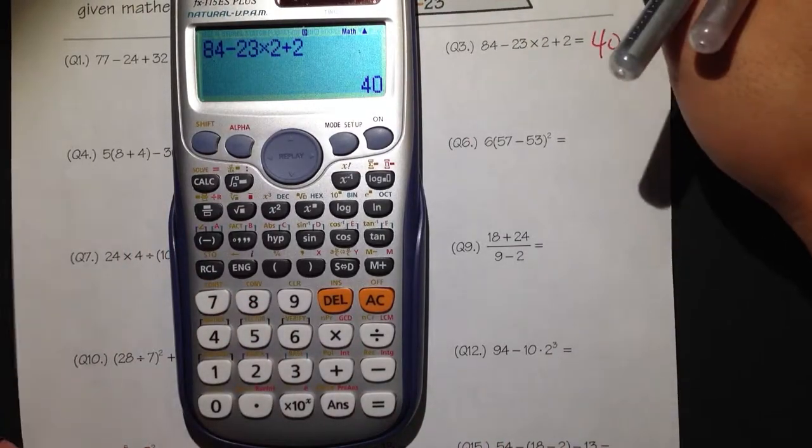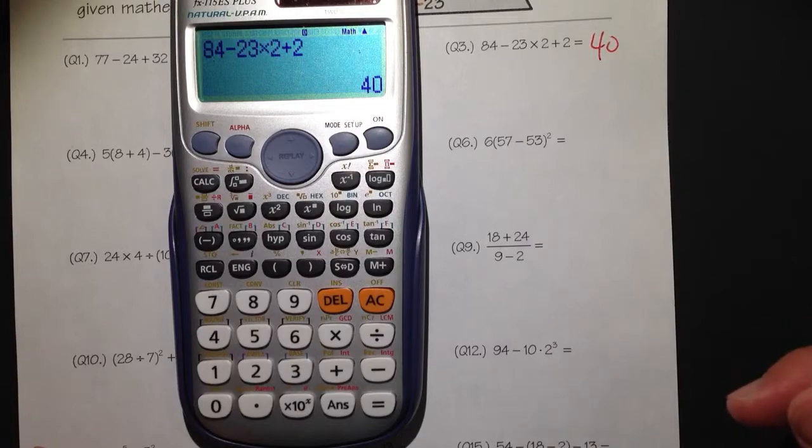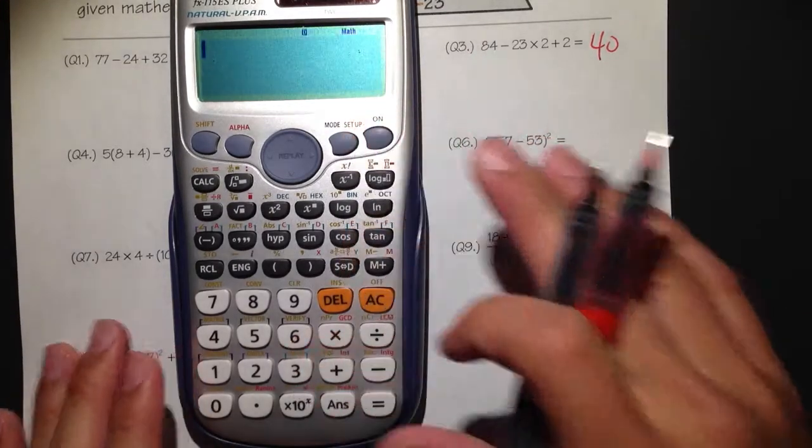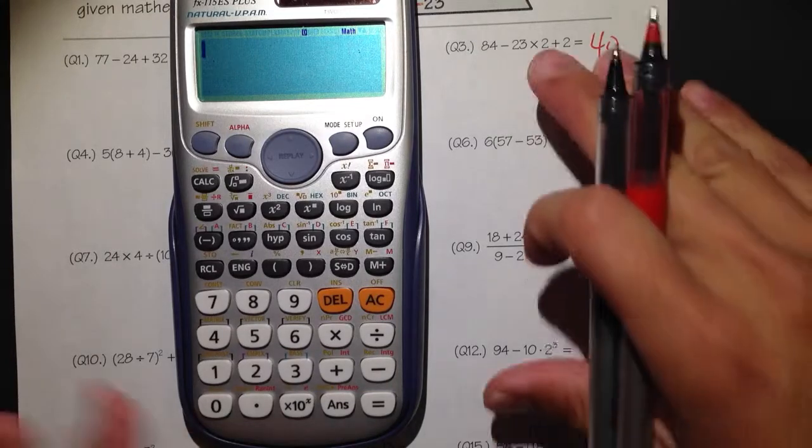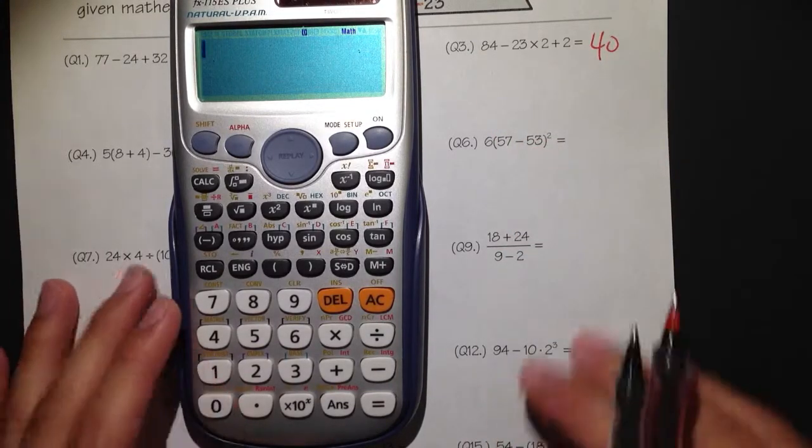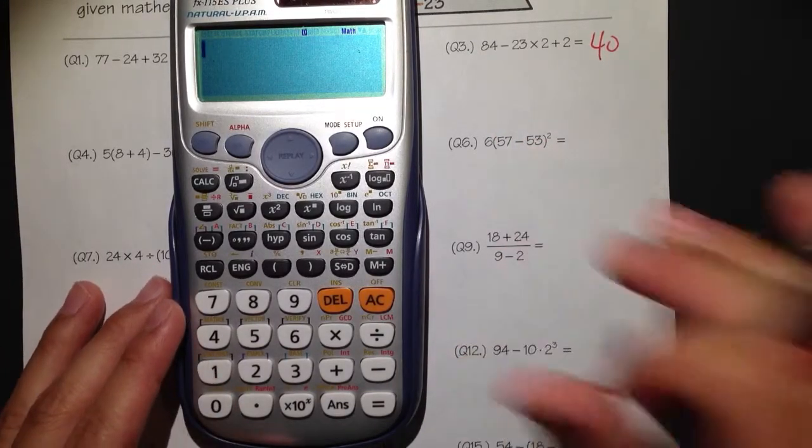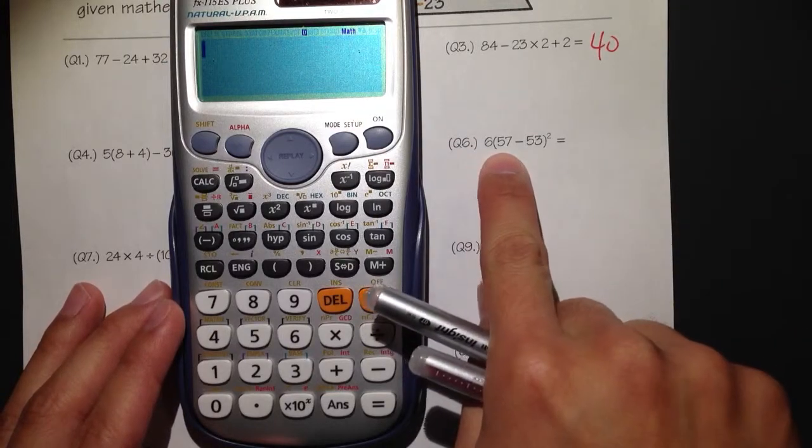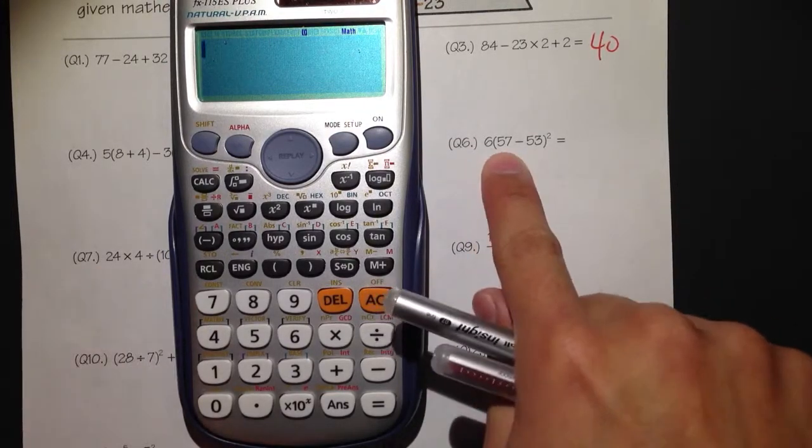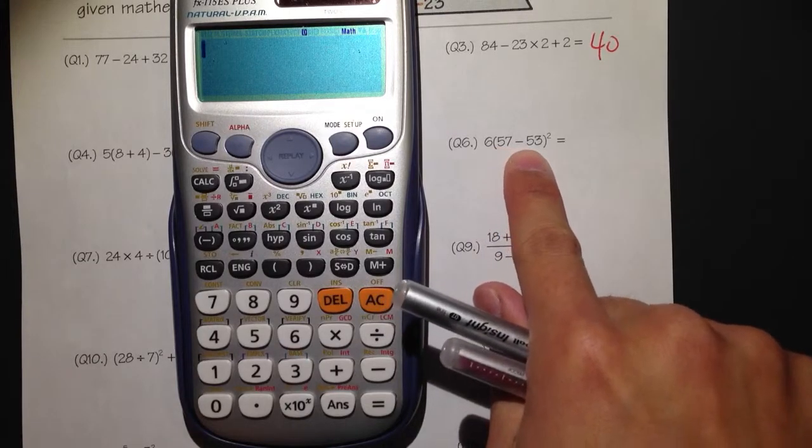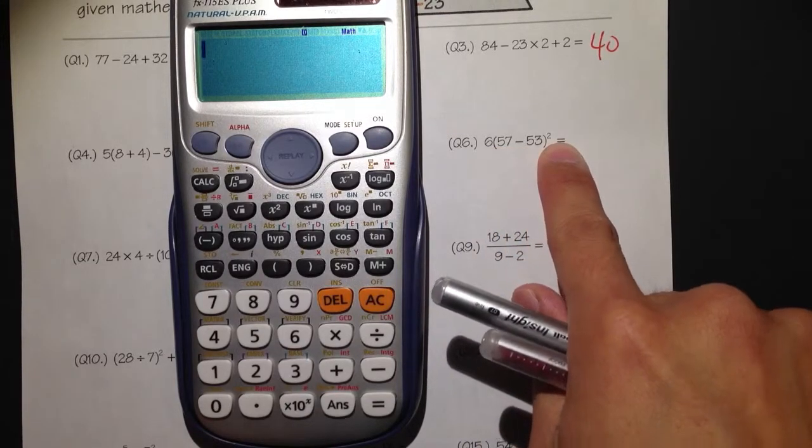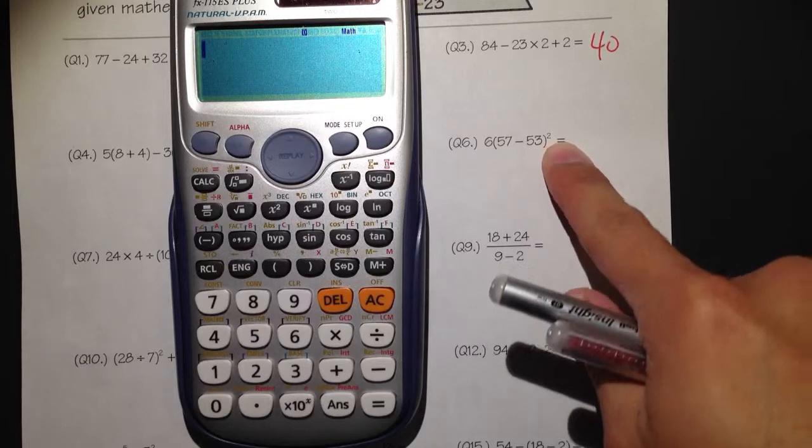So you can just get the answers right here immediately. It's really powerful, but sometimes it gets slightly complicated. Let me just work out some of these examples here. Number 6: we have 6 parentheses 57 minus 53 parentheses, to the second power.